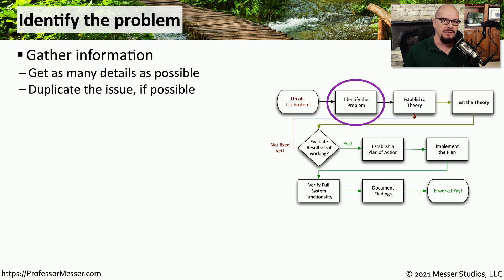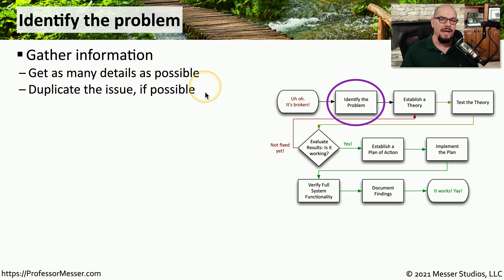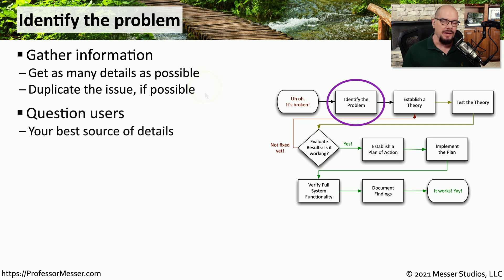Before taking any action or changing anything on your network, the first thing you should do is gather as much information as possible. This is the first phase of the problem, where we are identifying really what the problem happens to be. It would be very useful if we had a way to duplicate the problem. Sometimes we're trying to decipher what the problem might be from information left inside a help desk ticket, so it's very useful to reach out to the user and talk to them about exactly what they might be seeing.